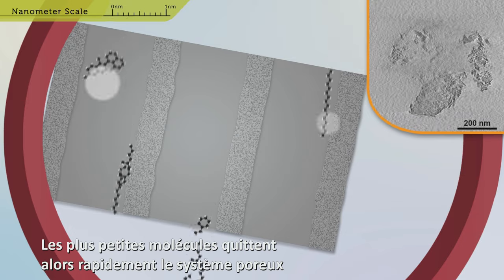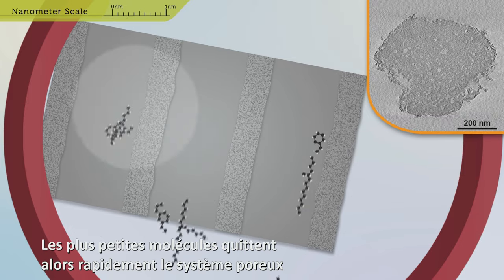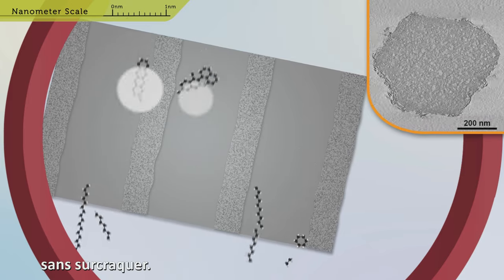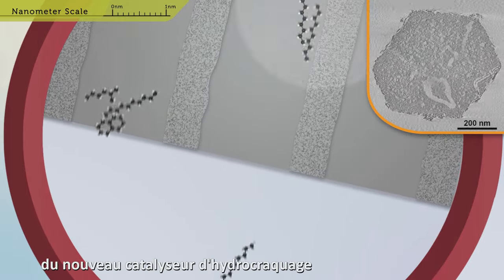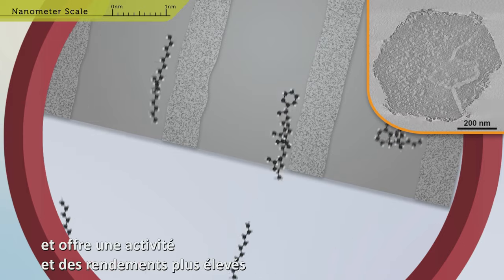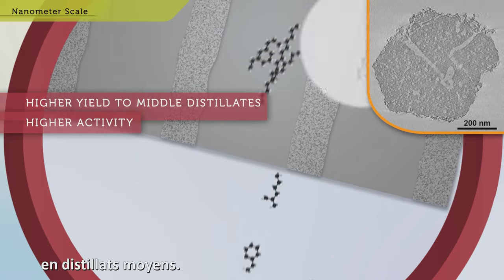In turn, the smaller molecules are able to leave the porous system quickly and not over-crack. The Total technological innovation lies in the unique properties of the newly developed hydrocracking catalyst, exhibiting a higher activity and yield to middle distillates.